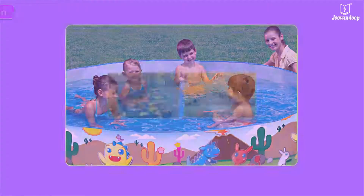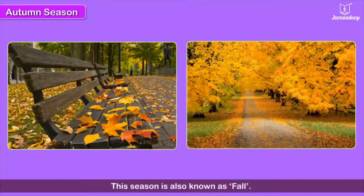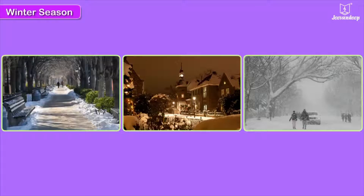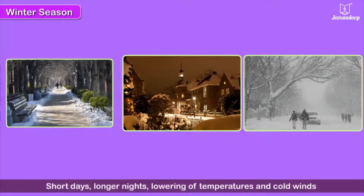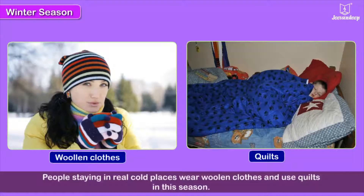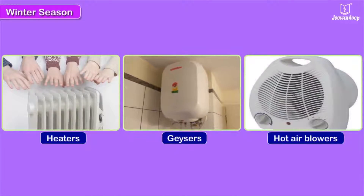Autumn season — also known as fall — is recognized by the falling or shedding of leaves. Winter season is characterized by short days, longer nights, lowering of temperatures, and cold winds. People wear woolen clothes and use quilts, heaters, geysers, and hot air blowers to keep themselves warm.